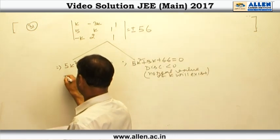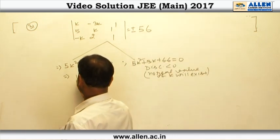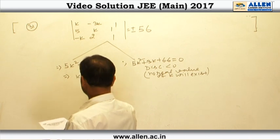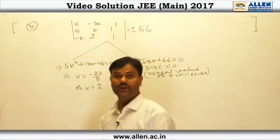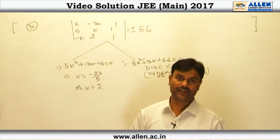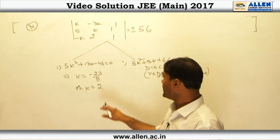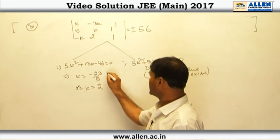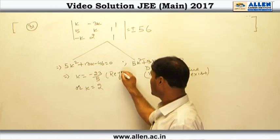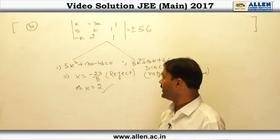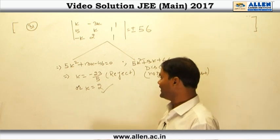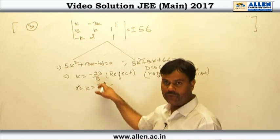When we factorize the first quadratic, we get 2 values of K: one will be −23/5 and the other value of K will be 2. Because in the question we are given that K is an integer, we reject −23/5 and consider only K = 2.